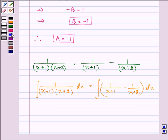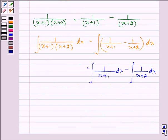Now taking integration sign separately with both terms, we get integral of 1 over x plus 1 dx minus integral of 1 over x plus 2 dx, and it is equal to log mod x plus 1 minus log mod x plus 2 plus c.